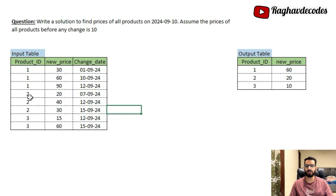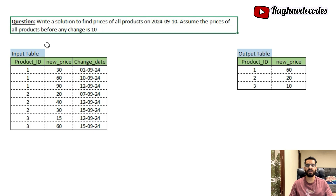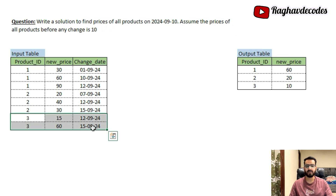For product ID 2, we don't have any record for 10th September. So we have to assume that the price between 7th and 12th was 20 rupees, because on 7th the price was set to 20 rupees and it remained that way until the next change on 12th September. For product ID 3, the change date was 12th and there is no record prior to 12th. So we go back to the problem statement: we assume prices before any change were 10 rupees.